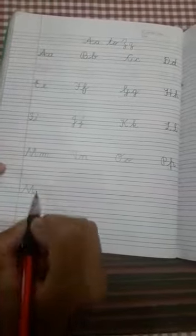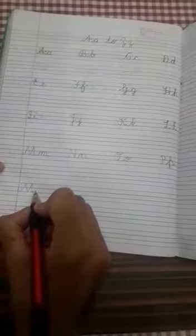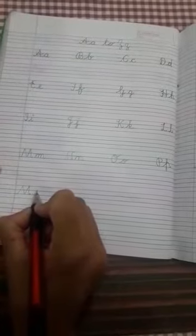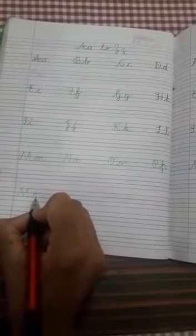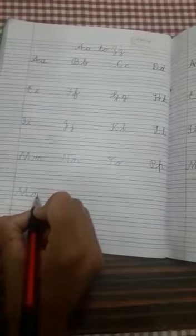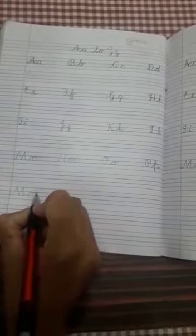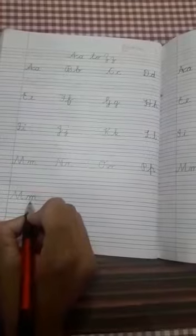Now small M. Put the pencil on third line, go up, come down, again go up and come down. Again go up and come down. Small M. M for mango.